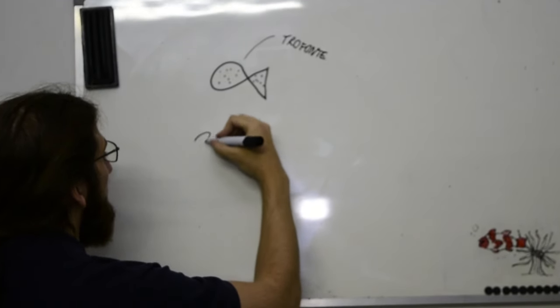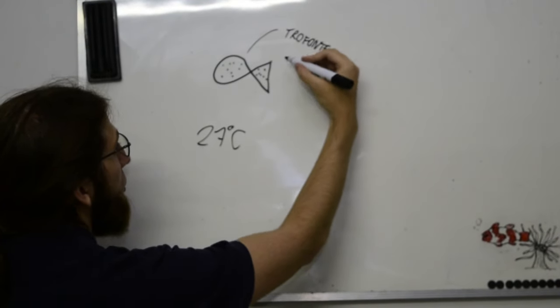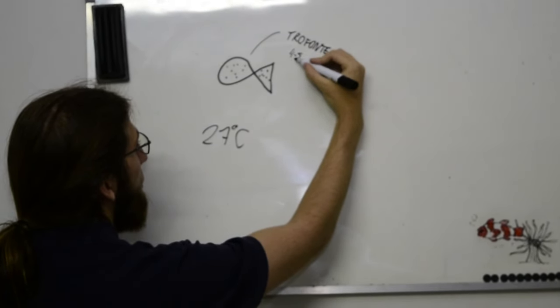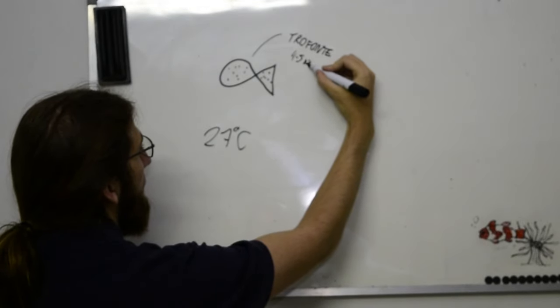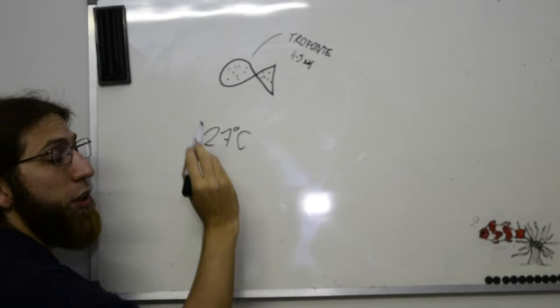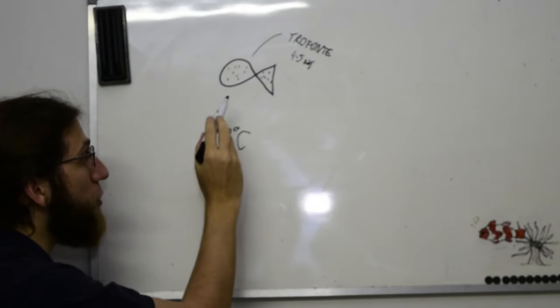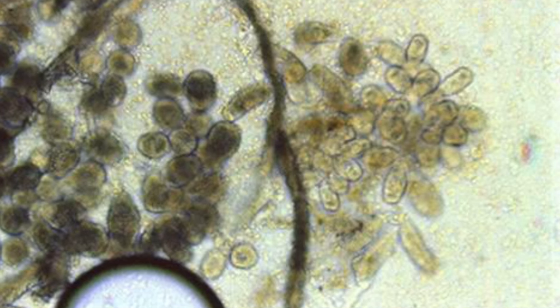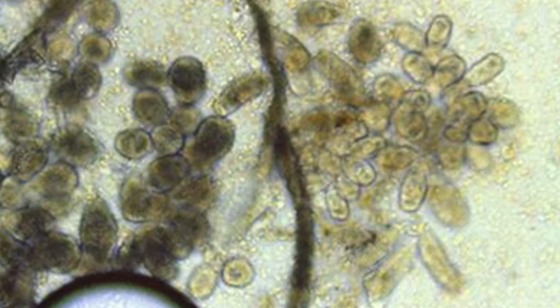A 27 graus de temperatura, esse estágio dura mais ou menos 4 ou 5 dias. Então o que acontece? Essas bolinhas que estão no corpo, nos trofontes, depois de 4 ou 5 dias elas caem do corpo do seu peixe.